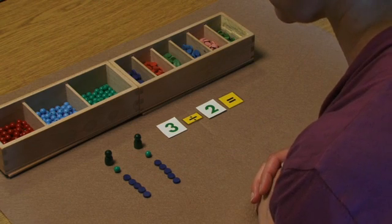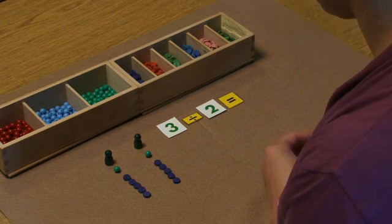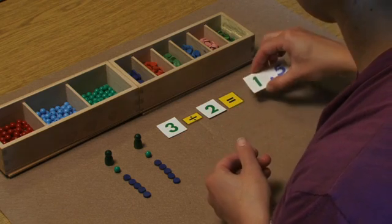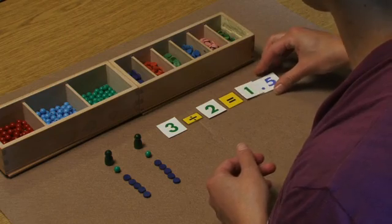I would have the student find the correct labels for that and they could finish the equation. Three divided by two equals one and five tenths.